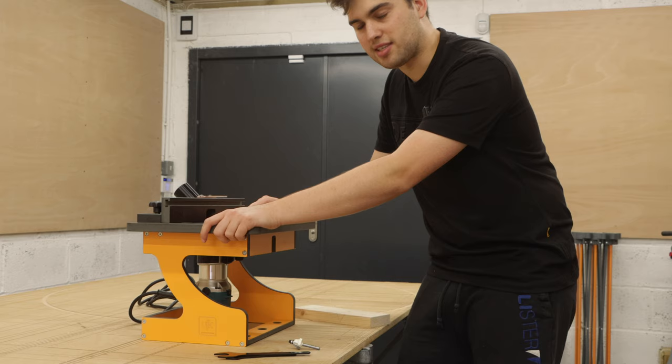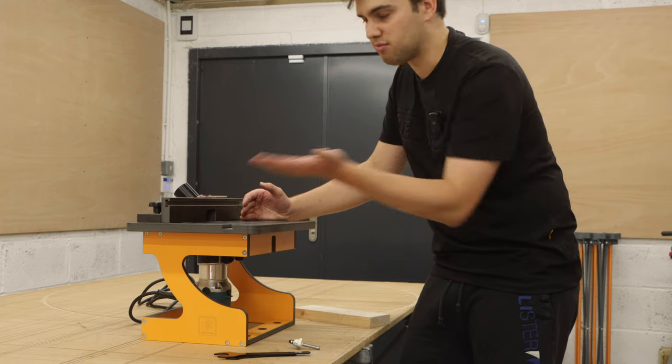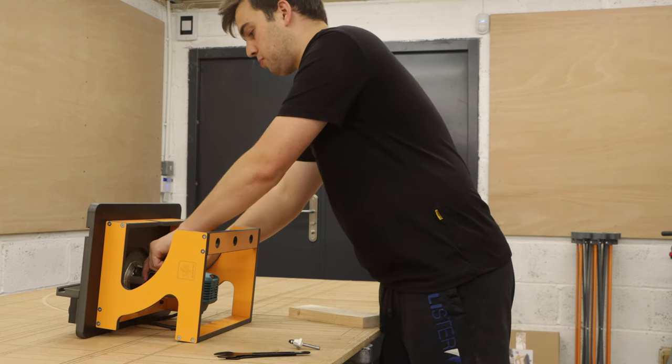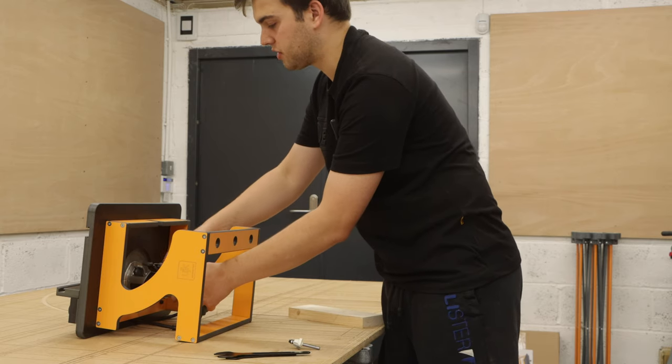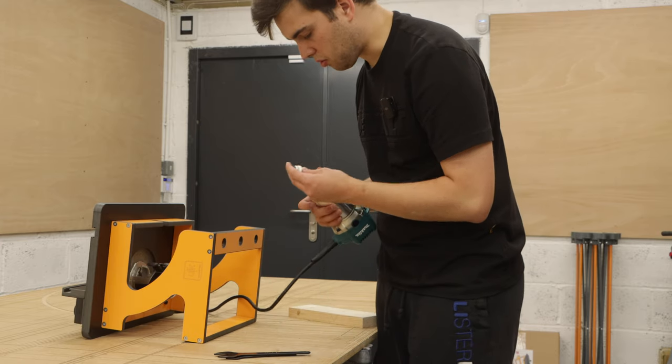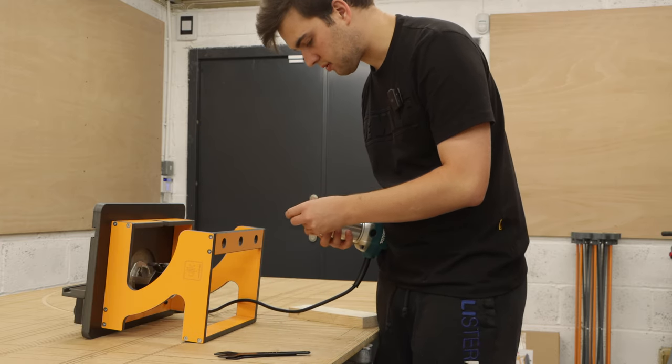So the router table is fully assembled and I think it's only right now to give it a test. Now this process will be different depending on what router you've installed. This router table is for quarter inch routers or trim routers.